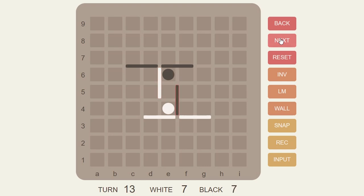So that if Black copies then White can place a wall like this, and if Black continues to copy White should close the bottom side.